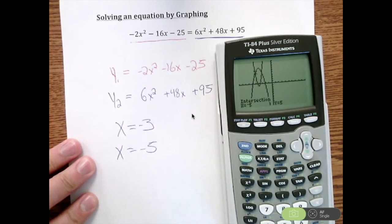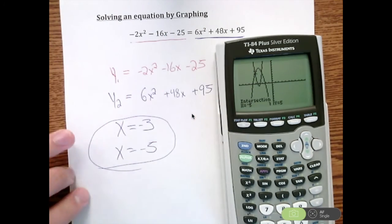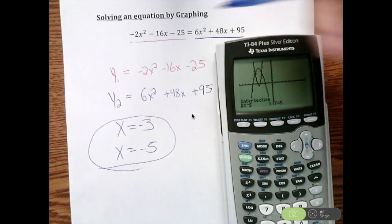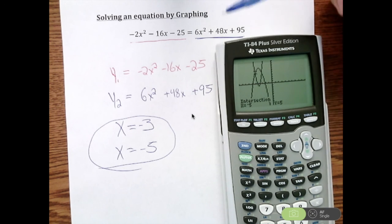Negative 3 and negative 5 are going to be my two solutions to that quadratic equation. So that was solving this equation by graphing.